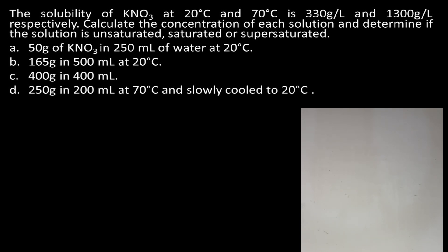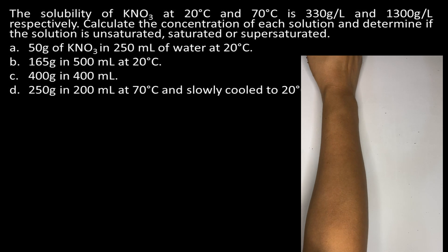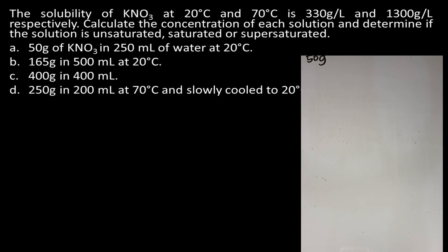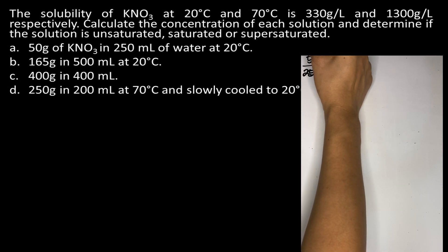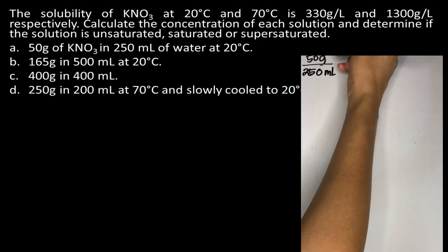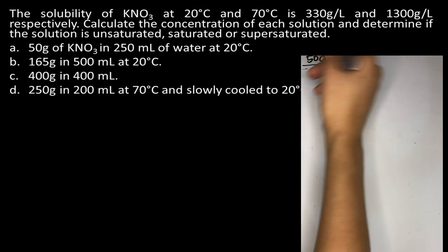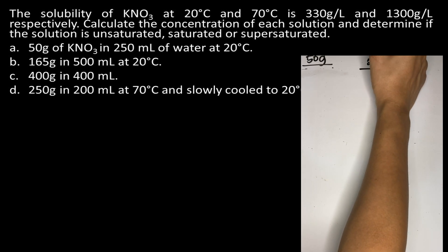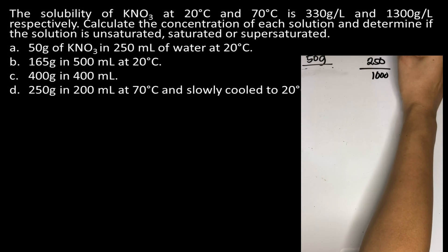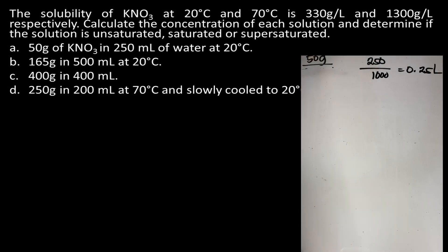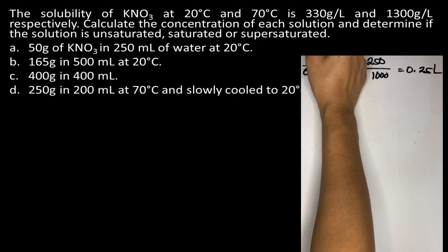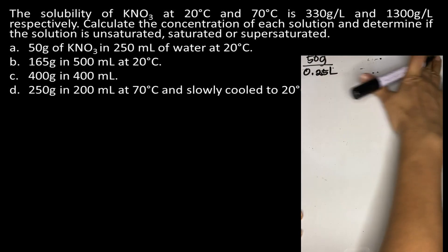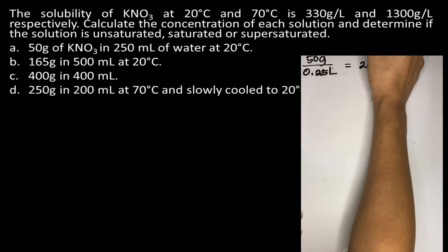To determine the concentration in grams per liter, we take 50 grams and divide it by the volume in liters. We need to convert 250 milliliters to liters: 1,000 milliliters equals 1 liter, so 250 milliliters equals 0.25 liters. Therefore, 50 grams divided by 0.25 liters equals 200 grams per liter.